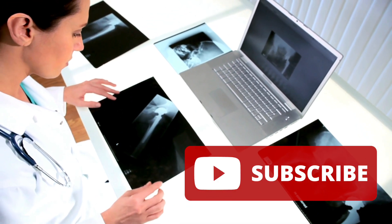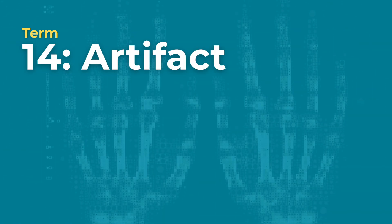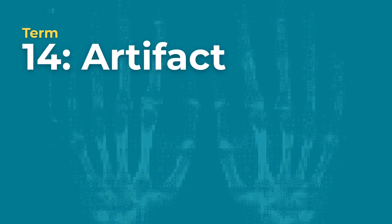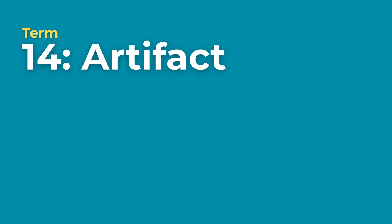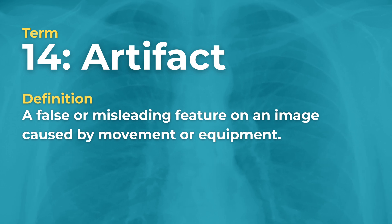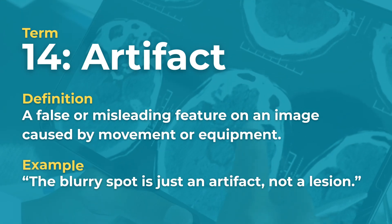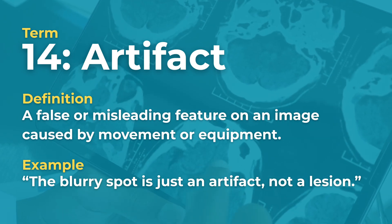We are down to our final two terms. Term number fourteen — Artefact. An artefact is a false or misleading feature on an image caused by movement or equipment. Example: The blurry spot is just an artefact, not a lesion.